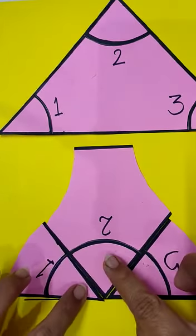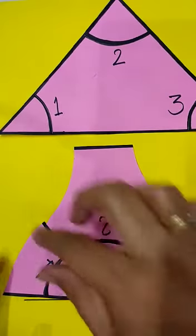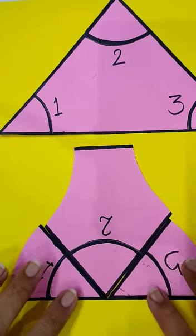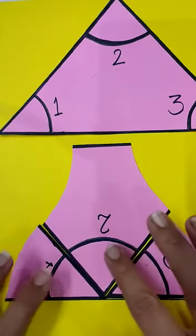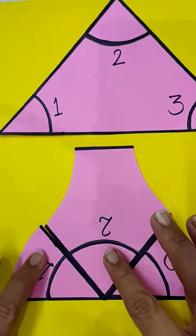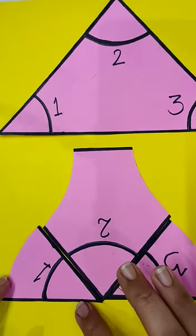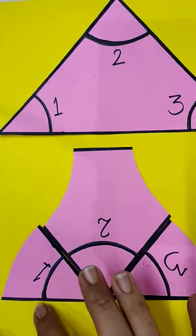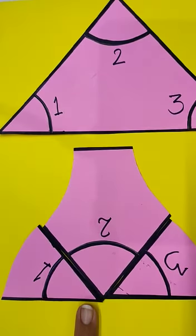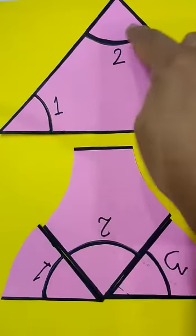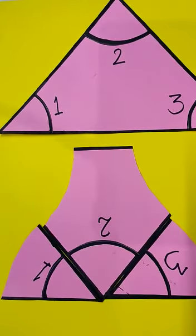If I arrange them like this, we can see that these three parts form a straight line. And what does a straight line mean? Yes, my dear students, it means an angle of 180 degrees. This shows that the sum of the three angles of a triangle is always equal to 180 degrees.